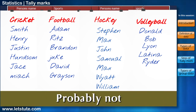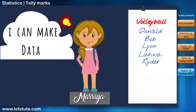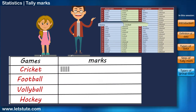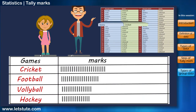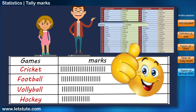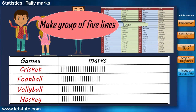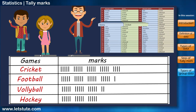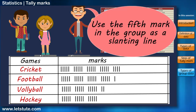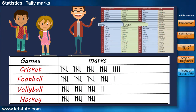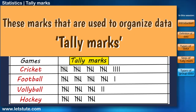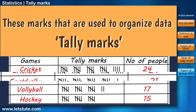Probably not. So Maria, another member of the club, got an idea to make data handling easier. As the organizer read the names in the list one by one, she started making short vertical lines in front of each sport. This definitely made the data less complicated. John then suggested Maria to make groups of five lines in order to count the data easily. To make counting more easy and efficient, the organizer used the fifth mark in the group as a slanting line. These marks used to organize data are known as tally marks, and by using them, we can find out the frequency of each group in a data easily.